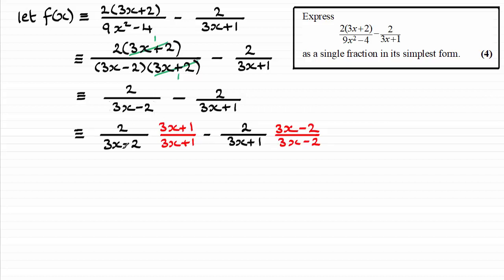So that means that I would need to times this fraction by essentially 1 in the shape of 3x plus 1 over 3x plus 1 and times this fraction here by 1 in the shape of 3x minus 2 over 3x minus 2.